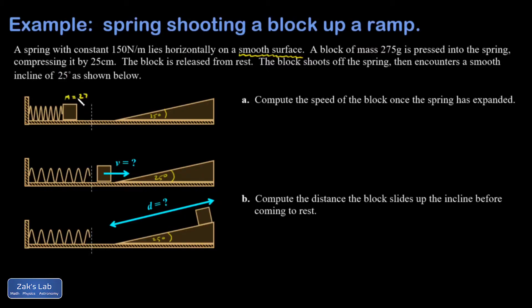The mass is 275 grams, I'm just going to change that to kilograms, 0.275 kilograms. The spring constant is 150 newtons per meter. I have the angle of elevation drawn into the picture already. My initial compression of the spring was 25 centimeters. And then this dashed line over here is indicating the equilibrium length of the spring.